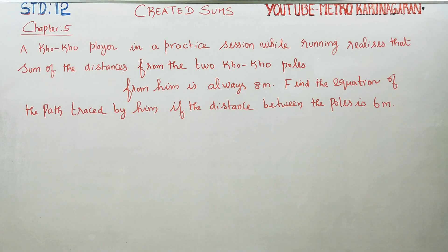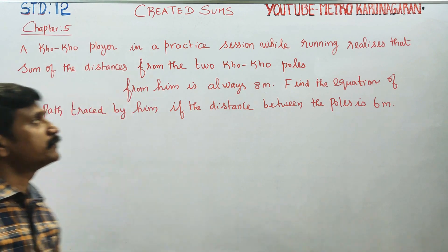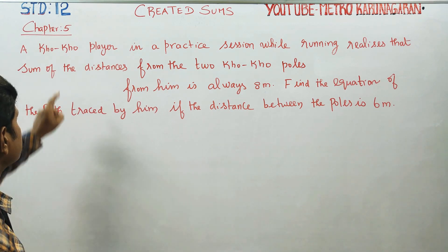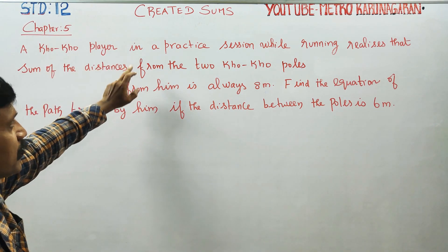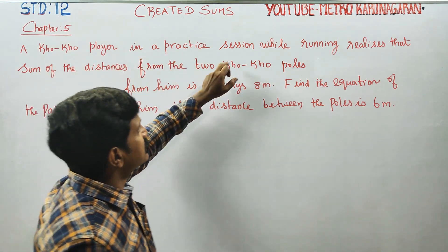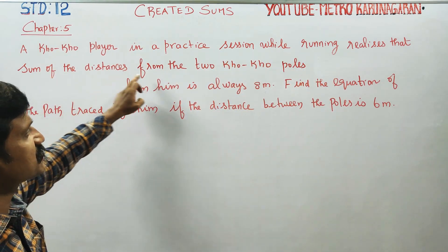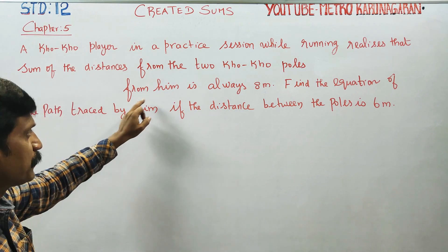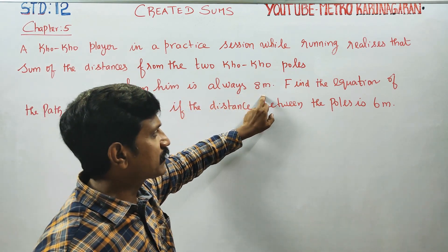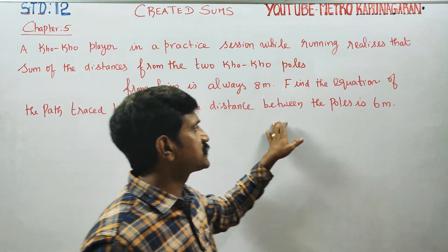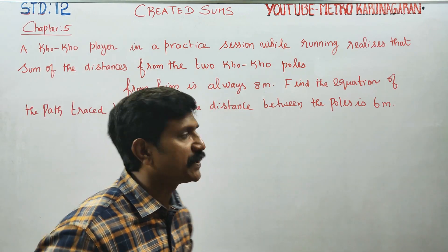Dear 12th standard students, I am Metron Karanagar. Chapter 5, created sums — this is an application sum, 5 marks. A cocoa player in a practice session while running realizes that the sum of the distances from the two cocoa poles from him is always 8 meters. Find the equation of the path traced by him if the distance between the poles is 6 meters.